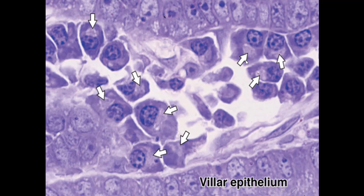In tissue sections we can recognize plasma cells by the clock-face shape of the nucleus, the basophilic cytoplasm due to high amount of RER, and the site of the Golgi apparatus. The Golgi organelle is not stained by routine H&E staining, so we see a clear, unstained part inside the cytoplasm. By these features we can recognize plasma cells, especially at sites of inflammation.